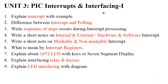Unit 3 is PIC Interrupts and Interfacing. 'Explain interrupts with example' — cover what an interrupt is, its types, examples, and sources of interrupts, generally for 6 to 8 marks. 'Difference between interrupt and polling' — mention 6 differences and draw their diagrams. 'Write the sequence of steps that occur during interrupt processing' — draw the proper flowchart of interrupt processing and explain the sequence of steps with an example. These three questions are generally asked for 6 to 8 marks.